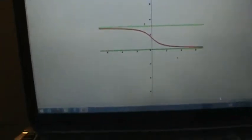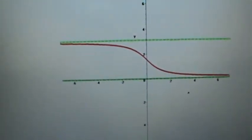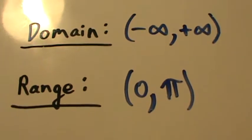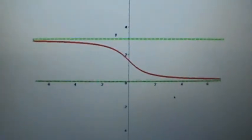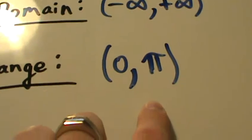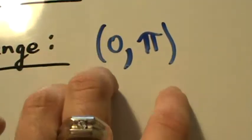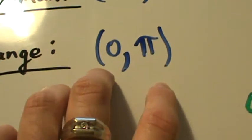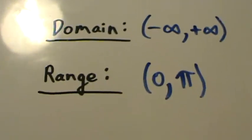Let's talk about some of the properties and see how it relates to the cotangent function. The domain, as we just saw in the graph, is all real numbers — the graph goes infinitely far to the left and to the right. When it goes infinitely far to the left, it gets closer and closer to y equals pi but never actually touches it. When it goes out infinitely far to the right, the graph gets closer and closer to y equals 0 but never actually touches it. The range is 0 to pi — since we have horizontal asymptotes at y equals 0 and y equals pi, those values are not included, so it's open parentheses, not square brackets.